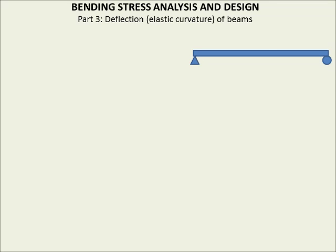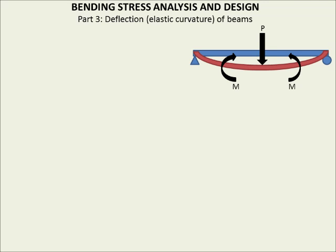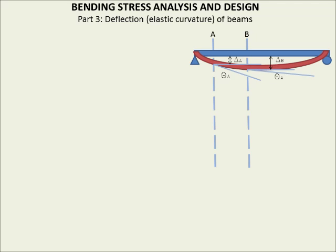If we have a beam and we load it with a force P perpendicular to its length, it will deform in this shape. Granted this is exaggerated, but let's consider that this is how it deforms magnified. The question is how can we measure this change in shape from the blue to the red beam? If we consider point A and point B, we can talk about a vertical change — a vertical drift downwards — which we'll call delta A and delta B.